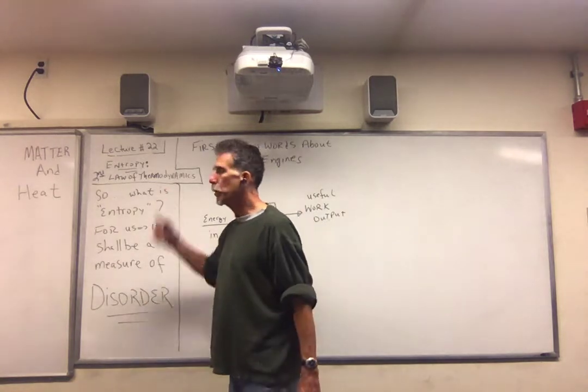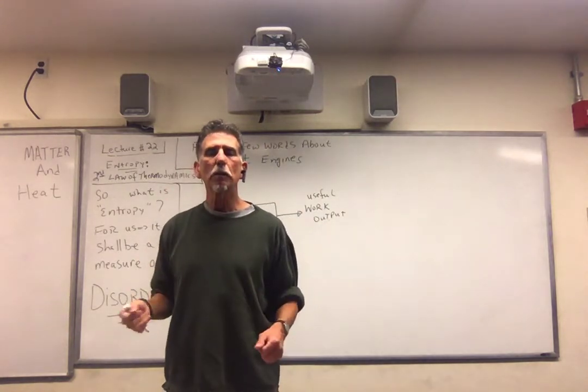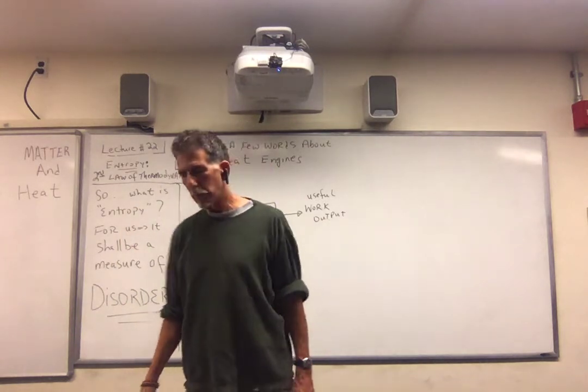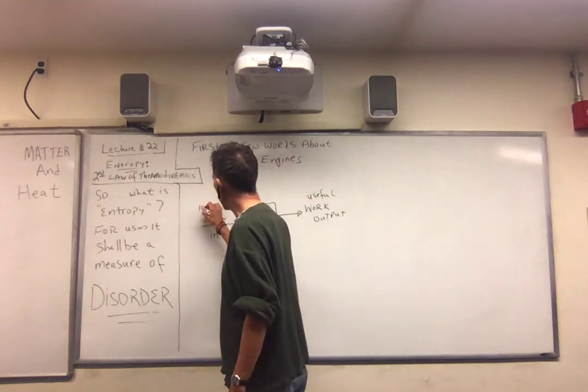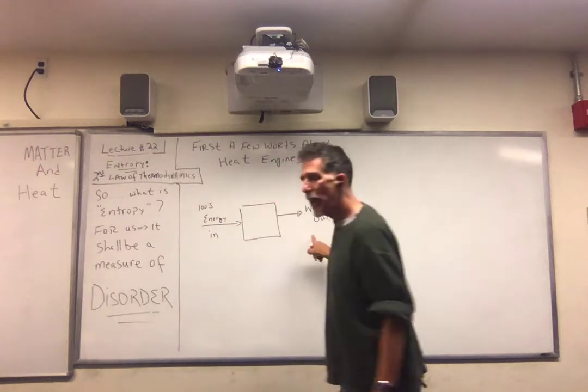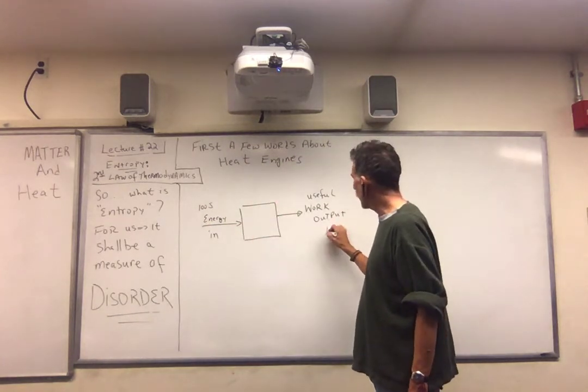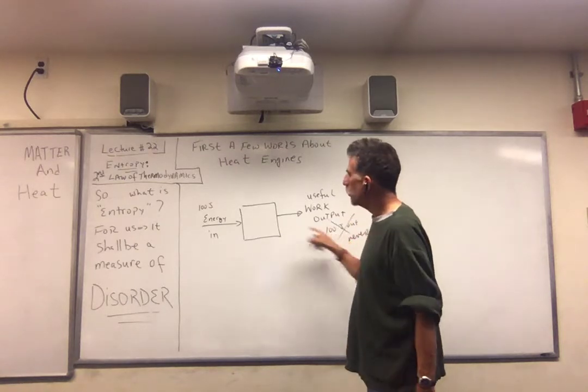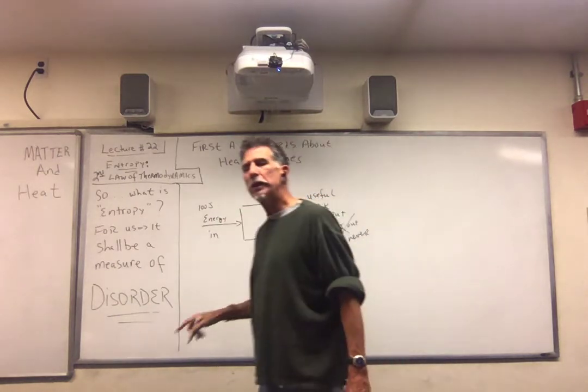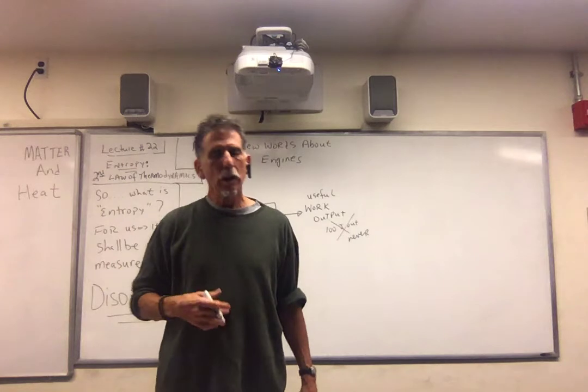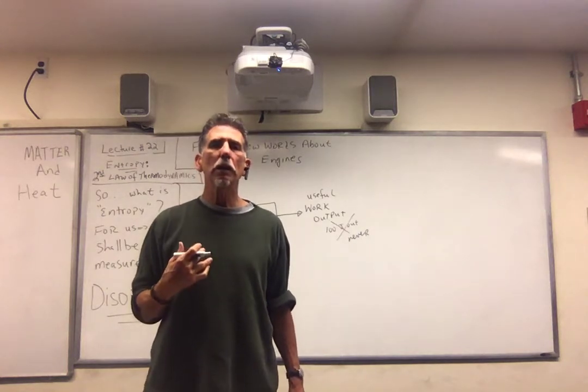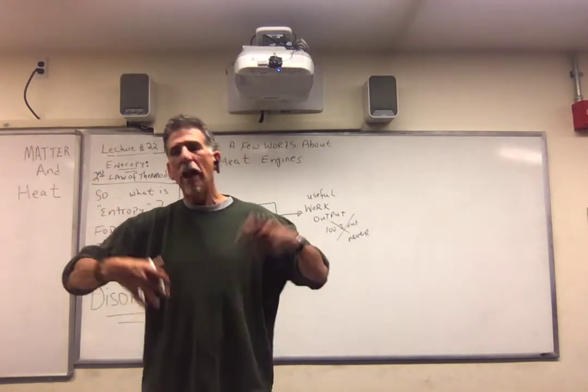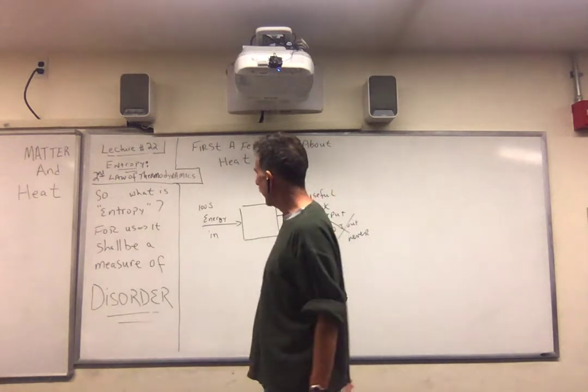Now, the second law of thermodynamics says that no system, no energy system, no heat engine can be 100% efficient. What does that mean? It means, suppose I put 100 units of energy, 100 joules of energy in. I can never, ever, ever get 100 joules of energy out. Never. If I put 100 joules in and got 100 joules out, we would say our efficiency is 100%. So one statement of the second law of thermodynamics or the law of entropy is that no engine can be 100% efficient. Energy is always lost. There's heat or wasted energy.